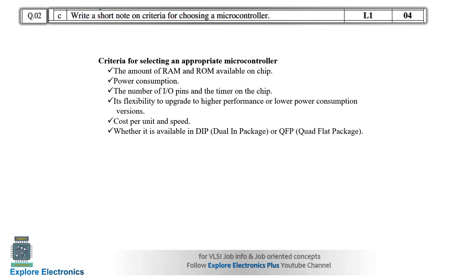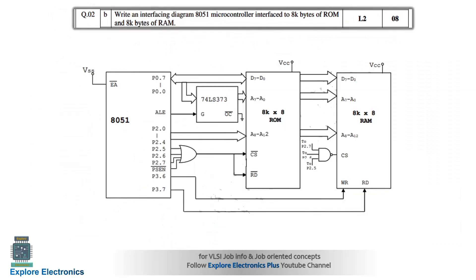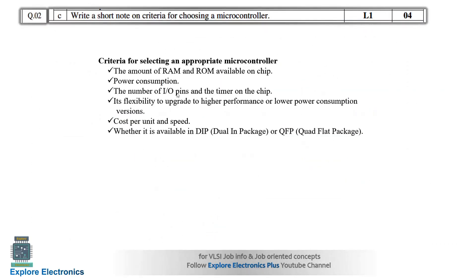The third question, 2C, asks: write a short note on the criteria for choosing a microcontroller — how we are going to choose a microcontroller for our project. The criteria include: the amount of RAM and ROM available on chip, because the microcontroller has inbuilt RAM and ROM and we need to choose based on application requirements; power consumption; and the number of I/O pins. For the 8051, that is 128 bytes RAM, 4 KB ROM, and 32 I/O pins.